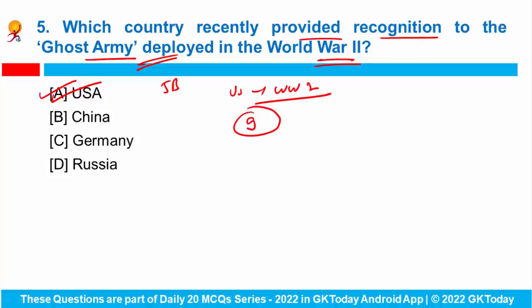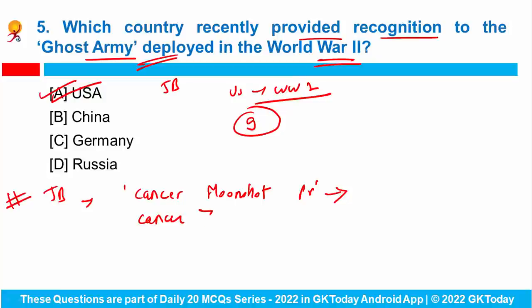The Congressional Gold Medal is Congress's highest award of national appreciation for distinguished contributions. Talking about USA, recently President Joe Biden announced the relaunch of the Cancer Moonshot Programme, which was originally started during the Obama administration. This program was launched with the goal of ending cancer, which kills more than 6 lakh people a year in the US, aiming to decrease the cancer death rate by at least 50% over the next 25 years.